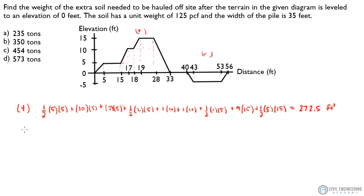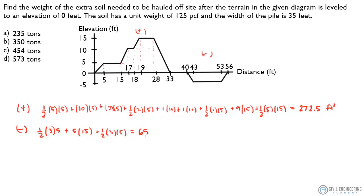Now we need to solve for the negative area. We've got a triangle: one half base of 3 times height of 5, plus the square area — base times height of 5 — plus the area of the second triangle: one half times 3 times 5. You could have just multiplied this by 2, but we'll do it the long way. That gives me 65 square feet. So the difference is 272.5 minus 65, which gives me 207.5 square feet.